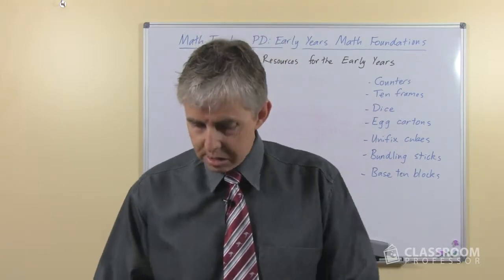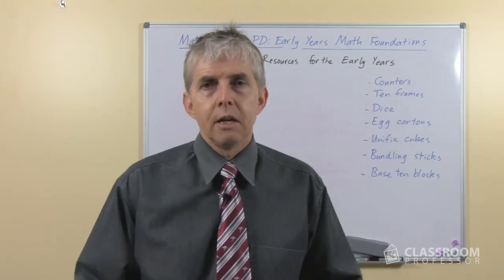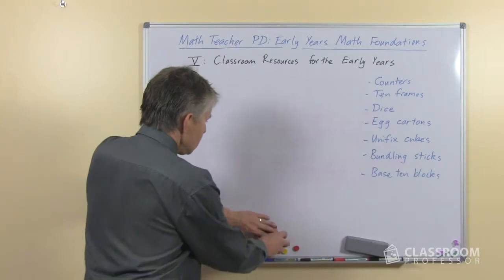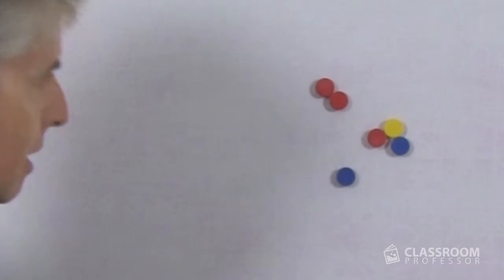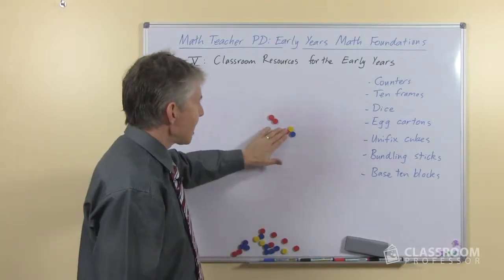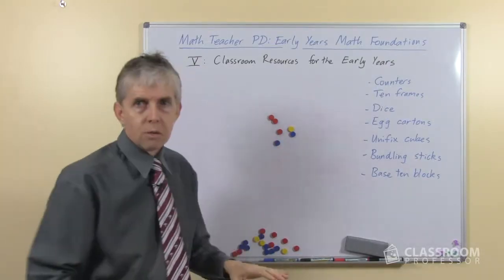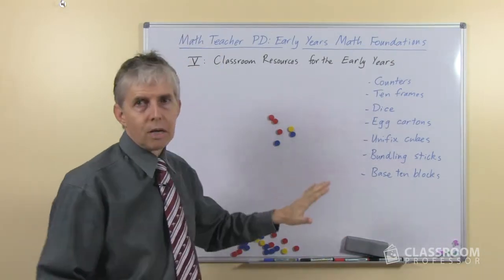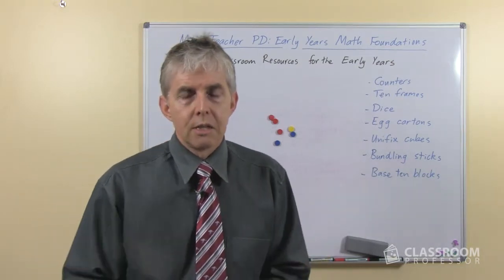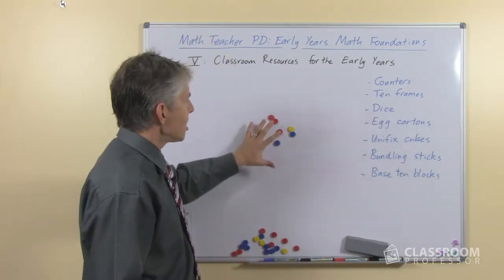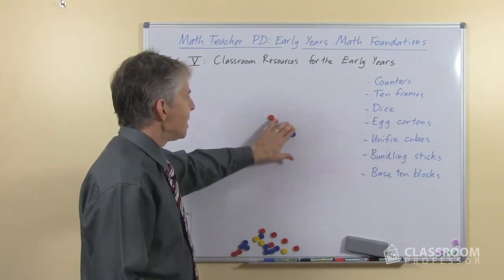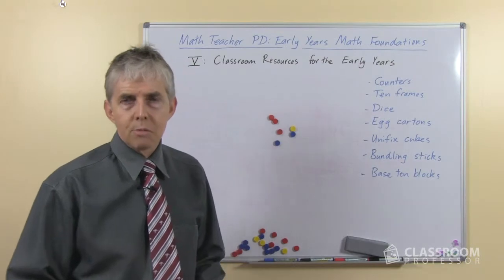We're going to start with counters, and if you're following in the notes you'll see that I recommend the counters should be plain and simple. These are perfectly fine — there's nothing special about them. It's nice having magnetic ones because I teach to the video a lot using this whiteboard, which has a metal back, so the magnetic resources just stick to the board. These are nice and colorful — you can no doubt get other colors — but the main thing is to keep them simple.